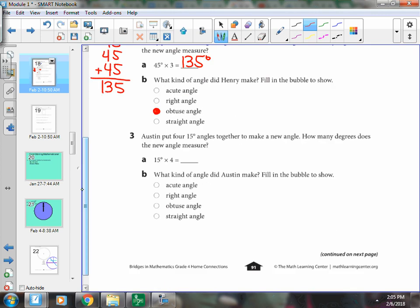Number three, Austin put four 15-degree angles together to make a new angle. So 15 times 4, you could think double-double. 15 doubled is 30, 30 doubled is 60.